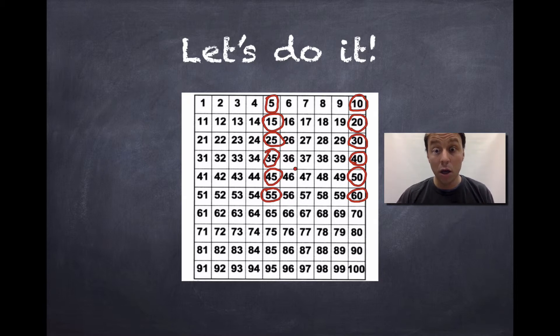Let's skip count from zero to 60 together. Okay. Ready? Zero, five, 10, 15, 20, 25, 30, 35, 40, 45, 50, 55, 60.